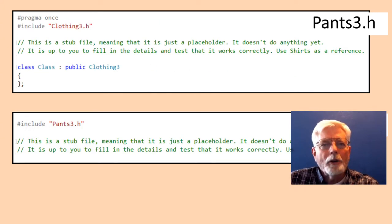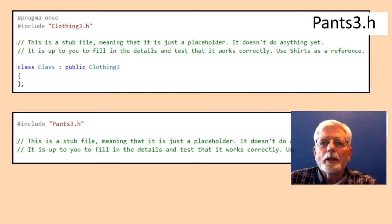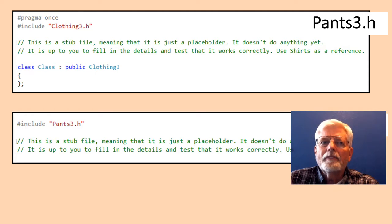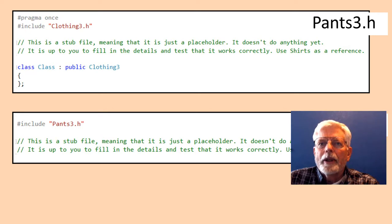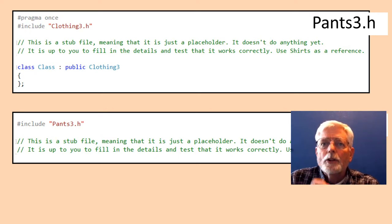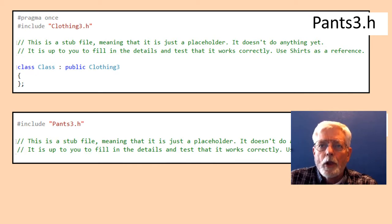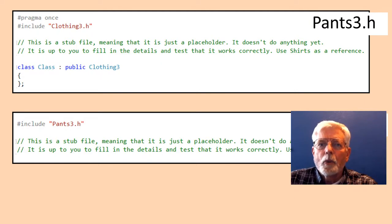I have not written any of the code for Pants3.h or Pants3.cpp because I am leaving them to you. These two files should be similar to the equivalent files for Shirt3, except instead of a single member variable named size, you need to provide two variables: length and width. You also need to provide getters and setters for them and provide a toString member function. Create an array of pants in main and test it to verify that it works correctly.